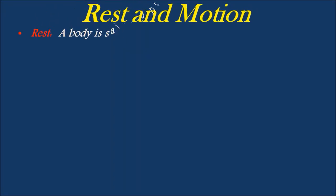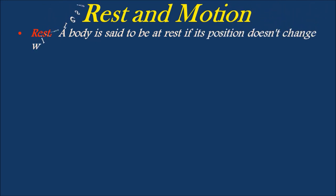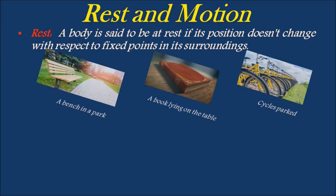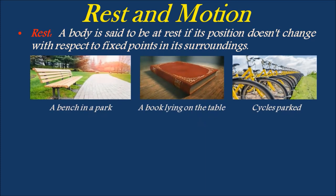A body is said to be at rest if its position doesn't change with respect to fixed points in its surroundings. Examples of bodies at rest are: a bench fixed in a park, a book lying on the table, and a group of cycles parked in the parking.